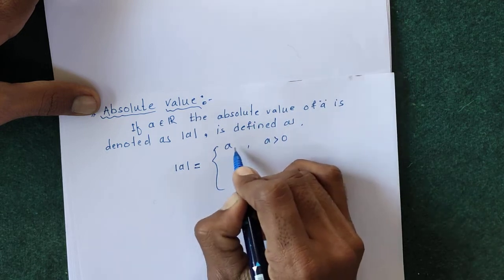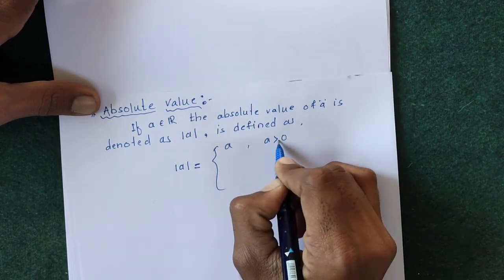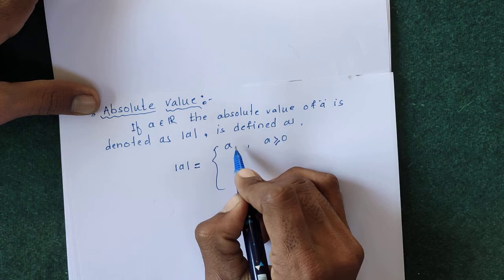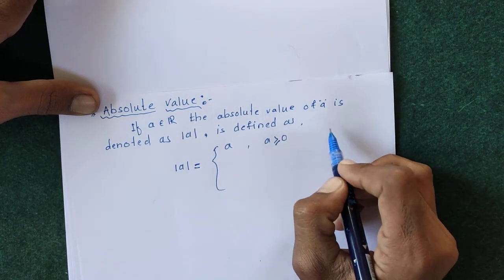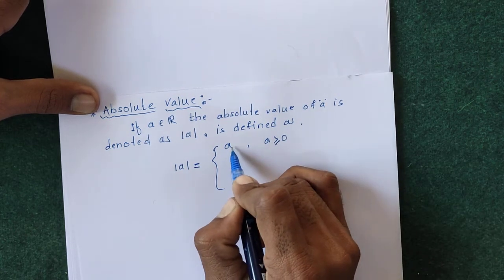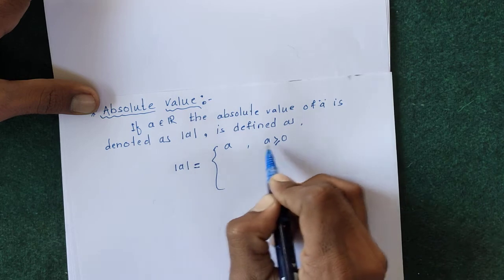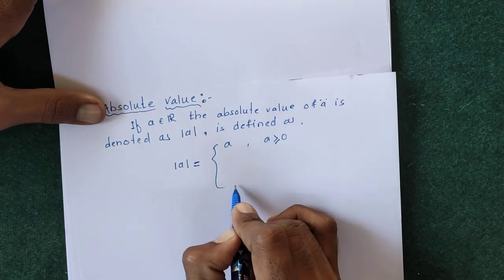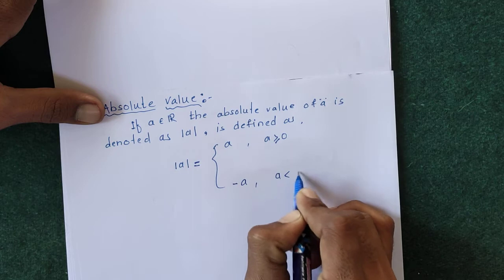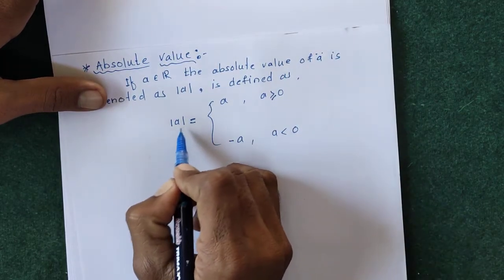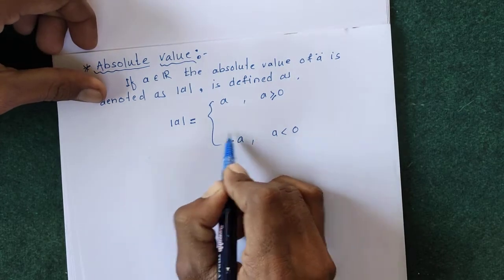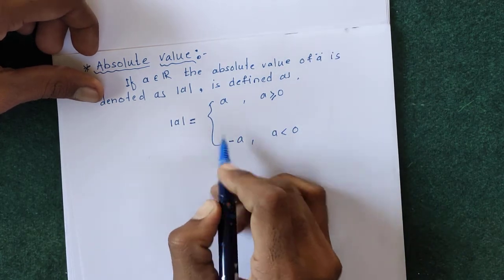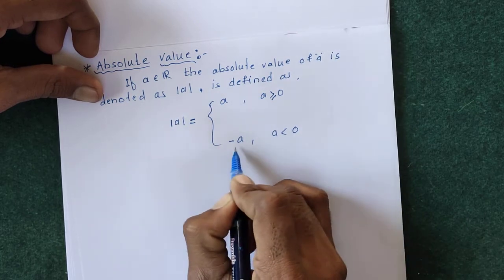So we take two possibilities: modulus of a equals a whenever a is greater than or equal to 0. If a equals 0 then mod 0 equals 0. If a equals 1 then mod 1 equals 1. For any positive or non-negative real number, modulus of a equals a. And modulus of a negative number equals minus a, whenever a is less than 0.